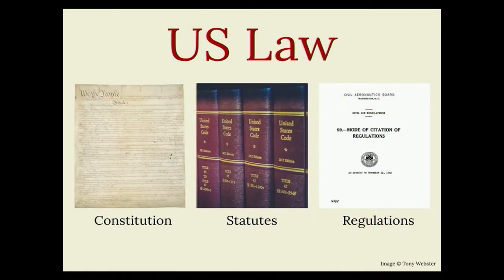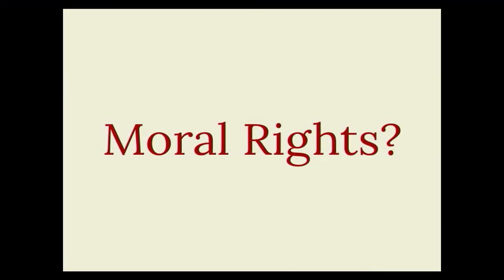The US Constitution addressed intellectual property directly, saying: to promote the progress of science and useful arts by securing for limited times to authors and inventors the exclusive right to their respective writings and discoveries. This was later refined into both law and regulation under the jurisdiction of the US Patent and Trademark Office and the US Copyright Office. In some other IP traditions, mostly continental Europe, authors' rights to their creation is considered an inherent or moral right. In the US, we treat intellectual property as the domain of law — you have only the rights assigned to you by law and nothing more.